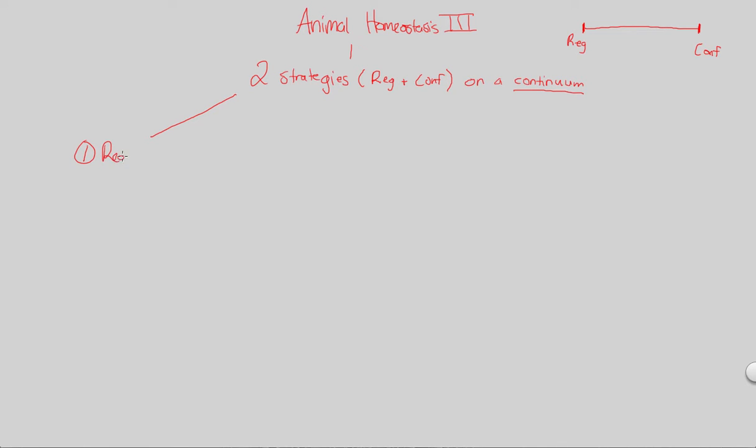Number one, let's look at what regulators are. And number two, what a conformer is. In order to accomplish homeostasis, you're either going to regulate or conform. As we're going through this flowchart, be sure to look at figure 40.8. It's a good summative figure of this entire idea that we're trying to emphasize.